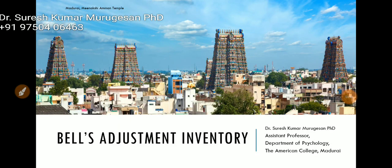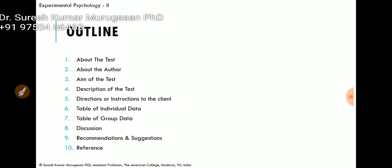Dear learners, today I am going to take the topic Bell's Adjustment Inventory. It is one of the topics we will cover in experimental psychology. In this presentation, the components I am going to cover are: about the test, about the author, aim of the test, description of the test, directions or instructions to the client, table of individual data, table of group data, discussion, recommendation and suggestions, and reference.